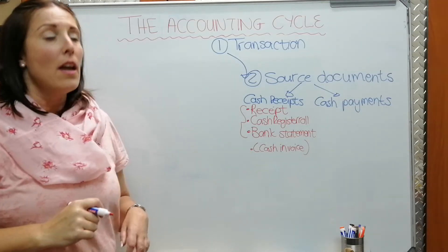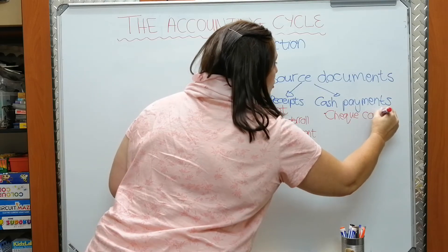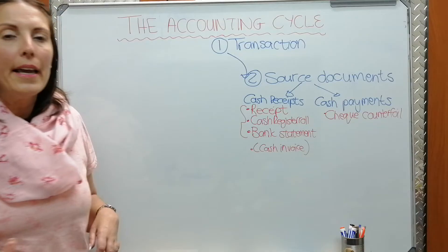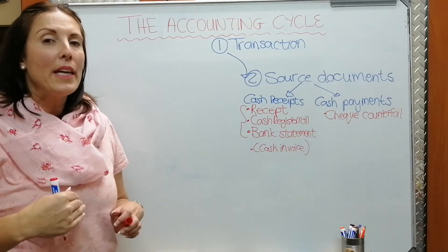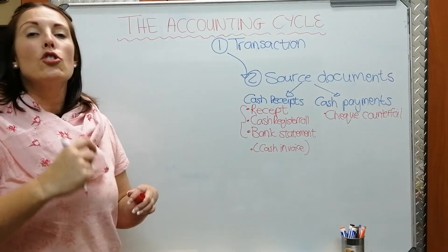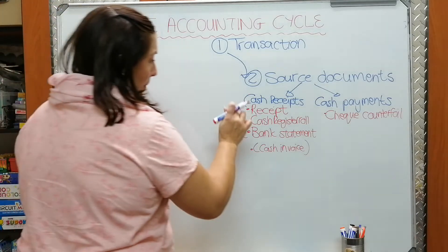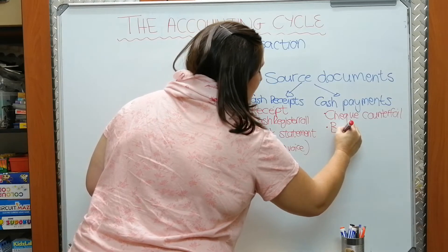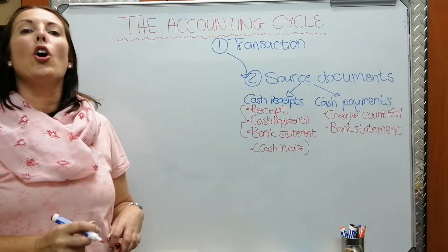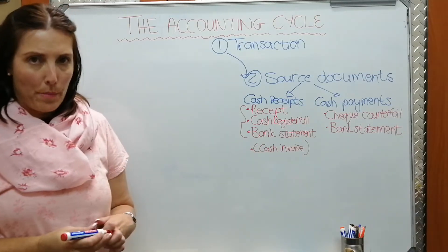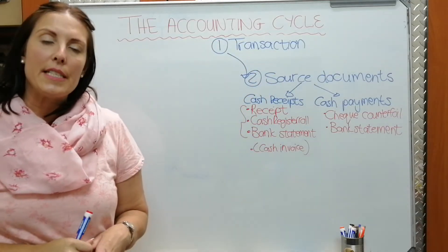When our business pays out money or buys something, our source document is the cheque counterfoil. Once we've written out the cheque and given it to the person or business we're buying from, the cheque is gone. All that remains in the chequebook is the small counterfoil, and from there we record that transaction. Similarly, when our business pays anything via EFT, we see those transactions on our bank statement as money going out.